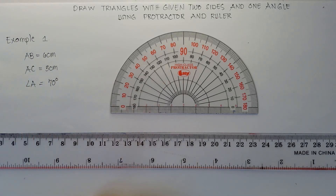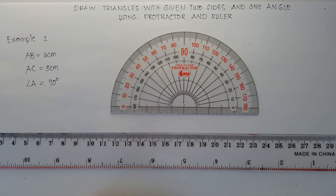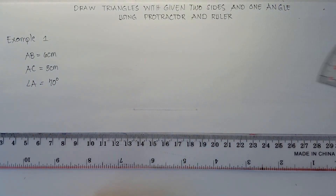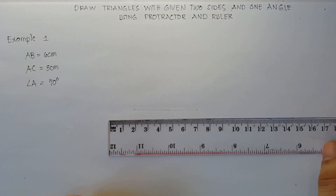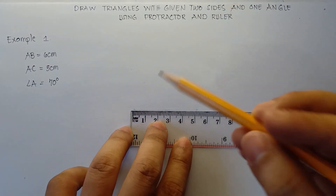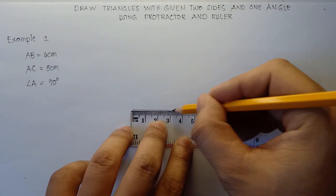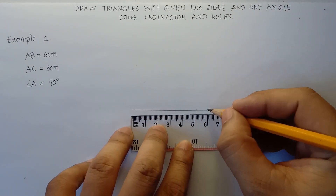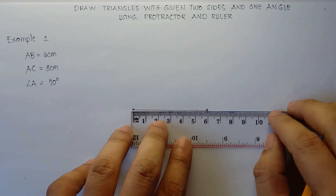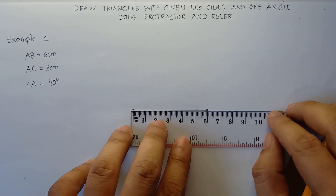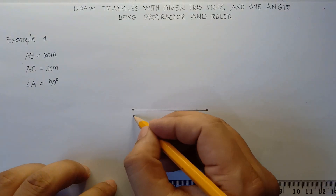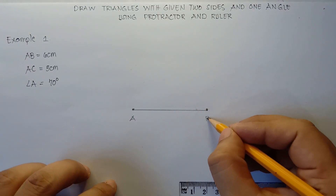First, you draw side AB, that is 6 centimeters. Draw a horizontal line that is 6 centimeters — that would be side AB. And do not forget to label: this is point A and then point B.